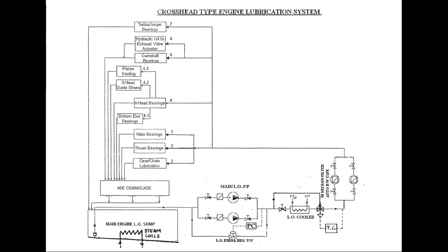In summary, in the crosshead type engine the underside of the liner is separated from the crankcase by means of a diaphragm, meaning the liner cannot be splash lubricated and a separate cylinder lubrication is necessary. Lube oil pumps are provided in redundancy, that is two in number. Thank you.